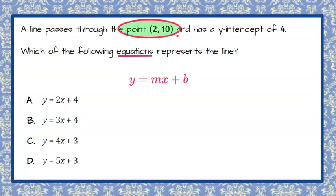Here's the information we're given. The line passes through the point, the ordered pair 2,10, and it has a y-intercept of 4.